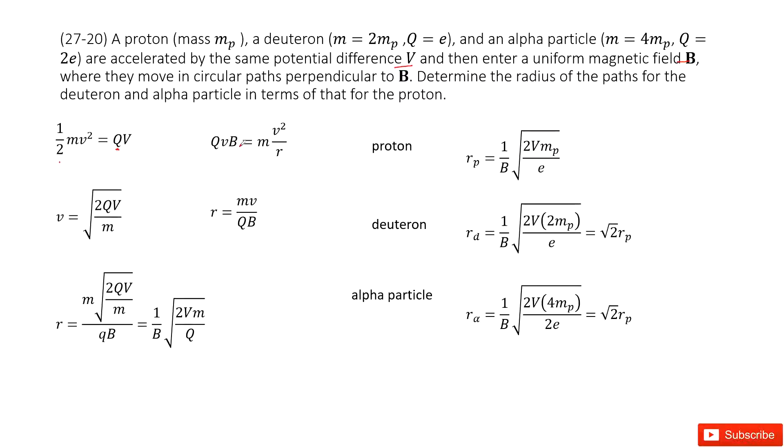Then the charged particles do circular motion in the magnetic field. The Lorentz force acts as the central force: QvB = mv²/R. This is the centripetal acceleration.